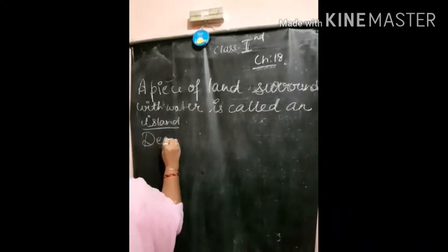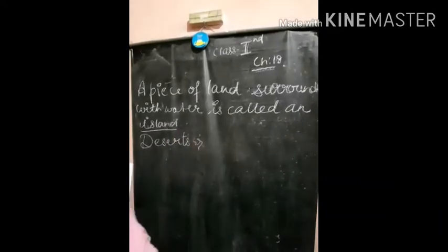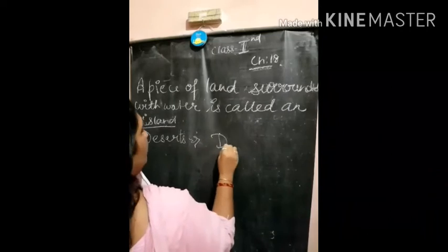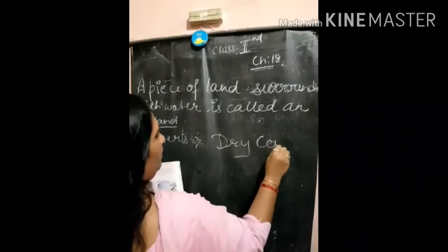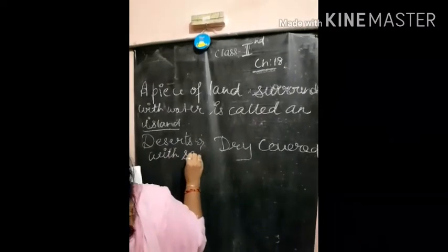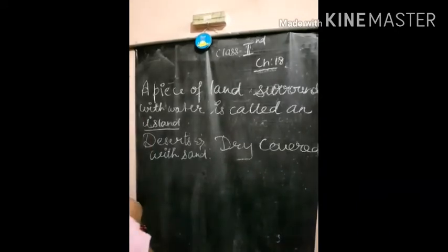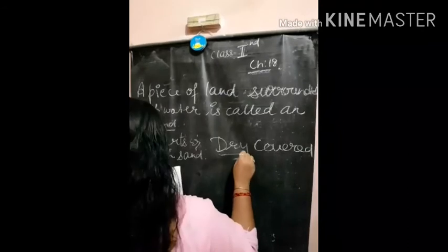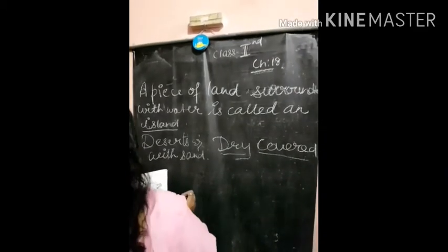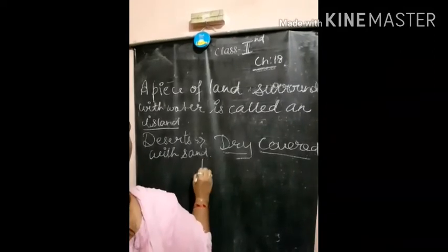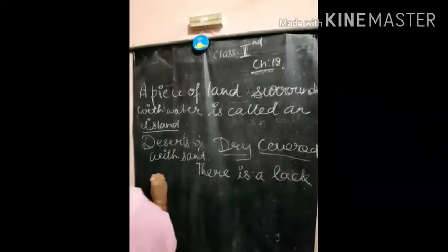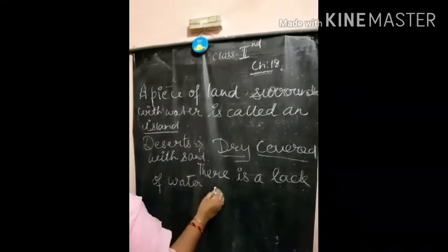Next is deserts. Deserts are large areas of land that are dry and usually covered with sand. There is a lack of water in the deserts.